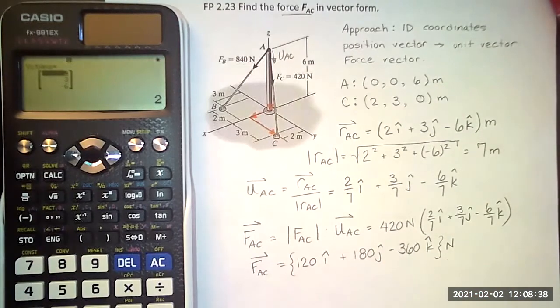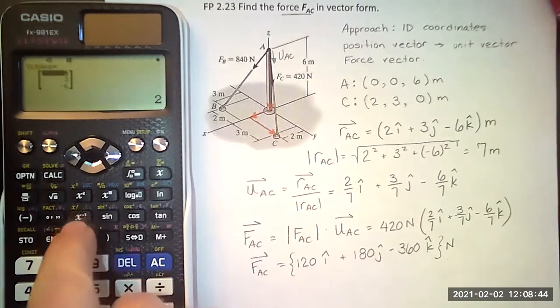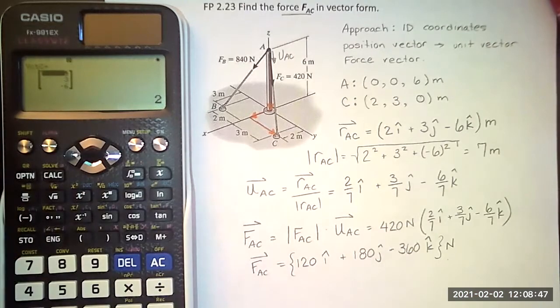Now I want to store this into vector C. So I'll click store. And I will click here, which stores it into C. And so now vector C equals 2, 3, negative 6.